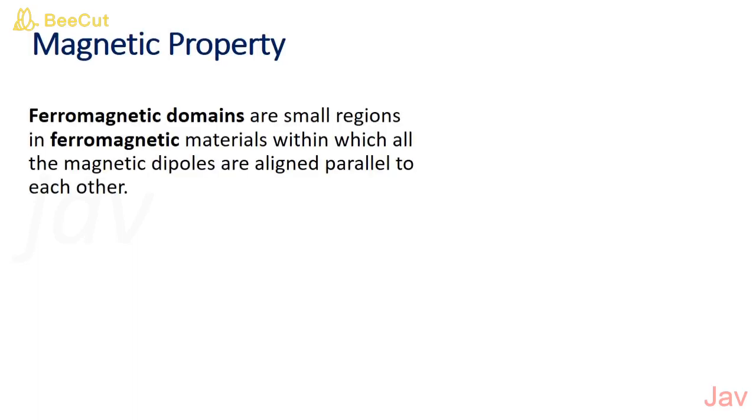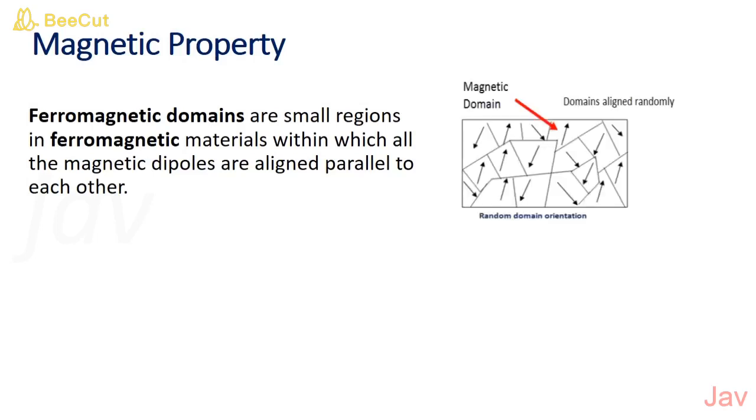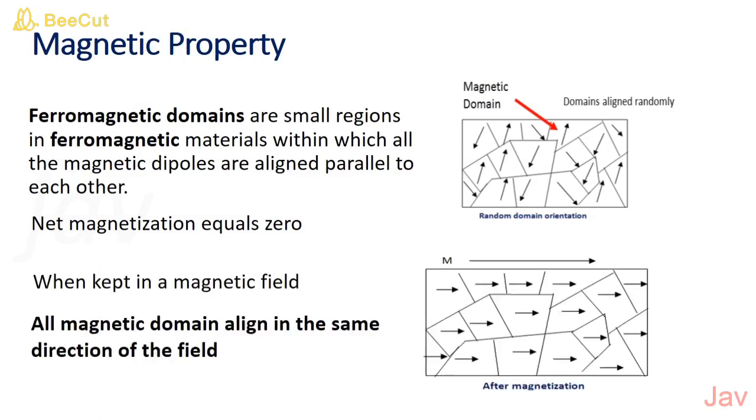In the case of a ferromagnetic material, it consists of small regions which are called ferromagnetic domains within which all magnetic dipoles are aligned parallel to each other. In the unmagnetized state, all magnetic moments are aligned randomly. Net magnetization equals zero. When it is kept in a magnetic field, all domains align in the same direction of the magnetic field.